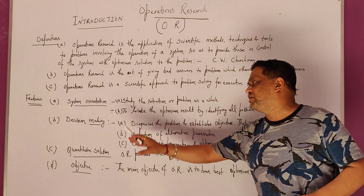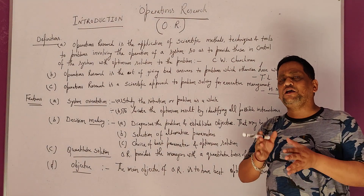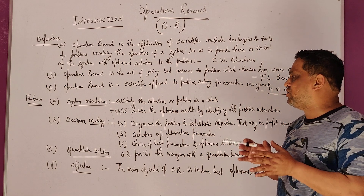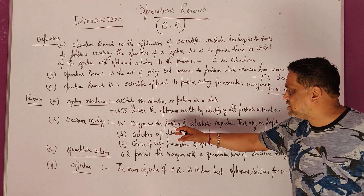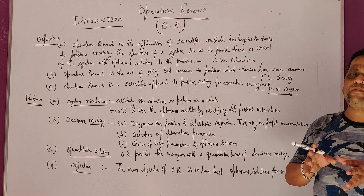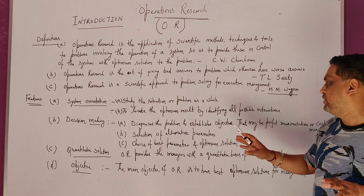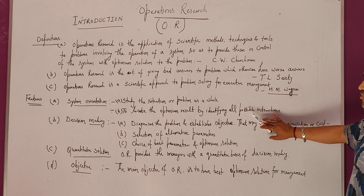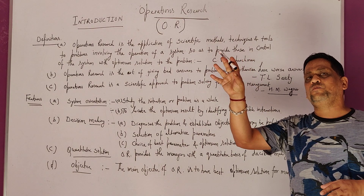Number two feature is Decision Making. Operations Research gives important decisions so that we can care about the results of the organization. When talking about decisions, number one part is the diagnostic study of the problems. We have to carefully diagnose the problem, analyze it, and then establish the objective — which may be profit maximization or cost minimization. Then we need to identify the objective function.